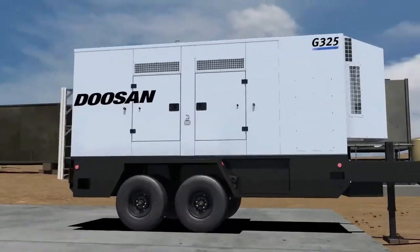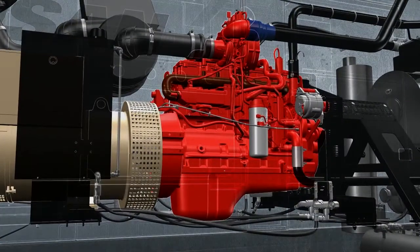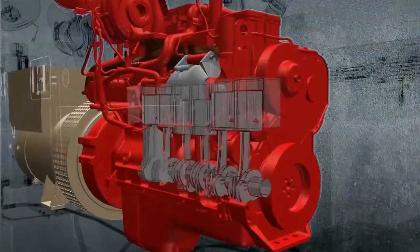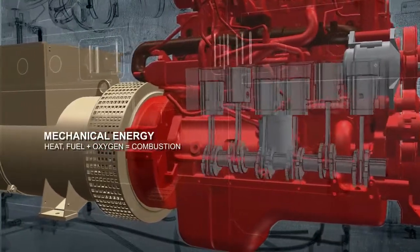A generator engine converts diesel fuel to mechanical energy that rotates the crankshaft. As combustion occurs in each cylinder, energy transmits to the engine crankshaft which generates mechanical power for the alternator.